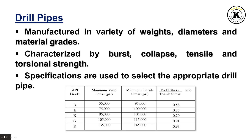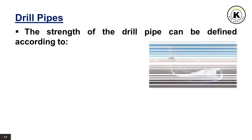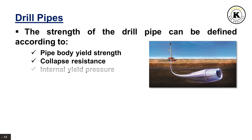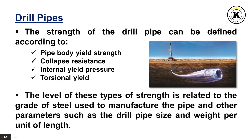These specifications are used to select the appropriate drill pipe for a particular drilling operation. The strength of the drill pipe can be defined by: pipe body yield strength, which represents resistance to axial tension; collapse resistance, which is the ability to resist external pressure; internal yield pressure, which is the ability to withstand internal pressure; and torsional yield, which is the resistance to torque. The level of these strengths is related to the grade of steel and other parameters such as drill pipe size and weight per unit of length.